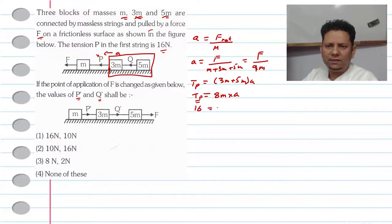We can write that 16 equals 8MA, which implies that MA equals 2, so A equals 2 divided by M.